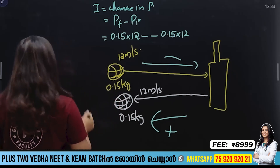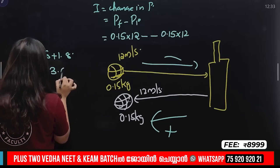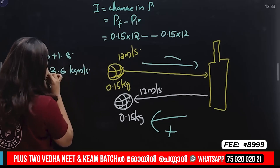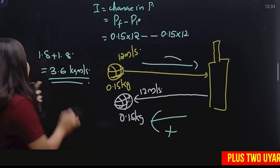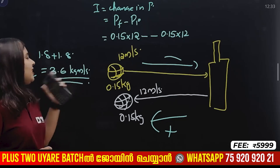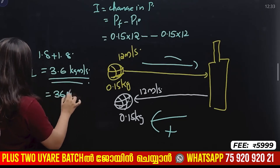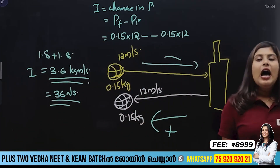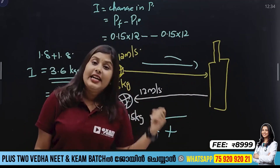So impulse equals 0.15 into 12 plus 0.15 into 12, which is 1.8 plus 1.8 equals 3.6 kg meter per second, that is 3.6 N·s.